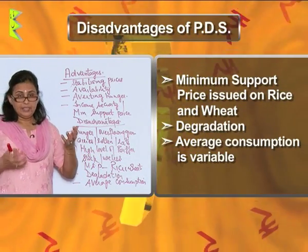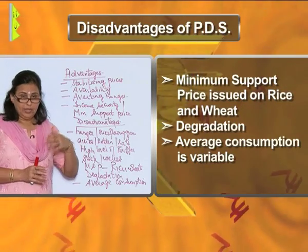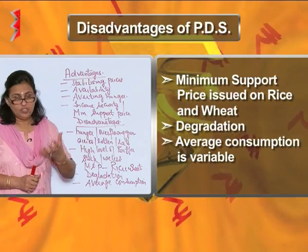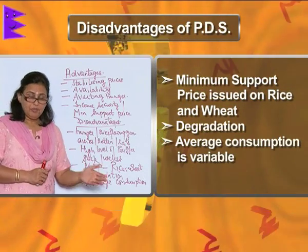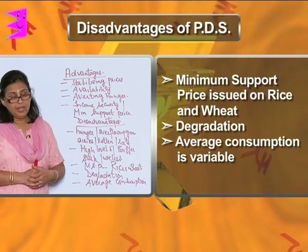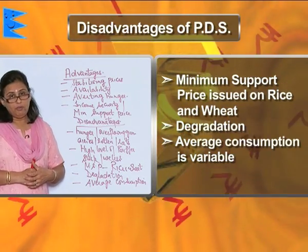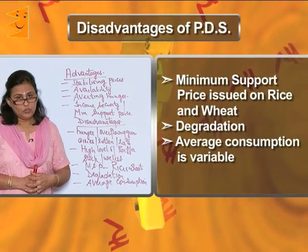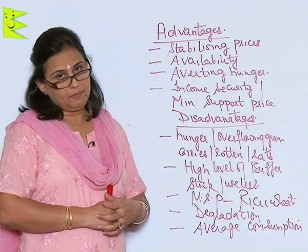We also see that the average consumption in India is variable. In some states, the average consumption of an individual is just 300 grams, whereas in other states it could be four or five times more than that. So these are the disadvantages of the public distribution system.